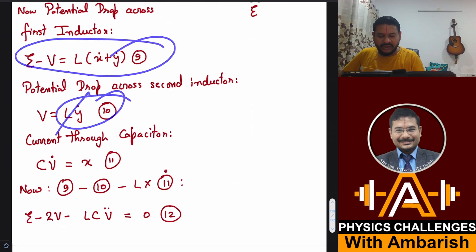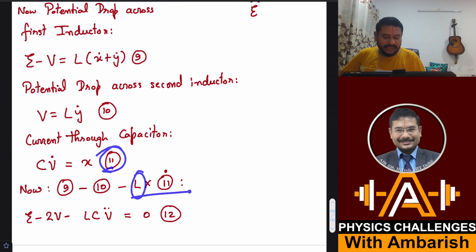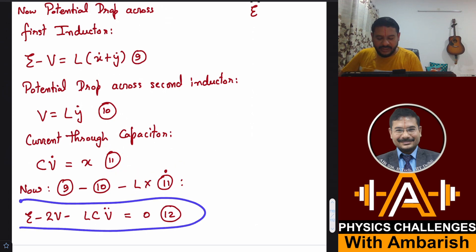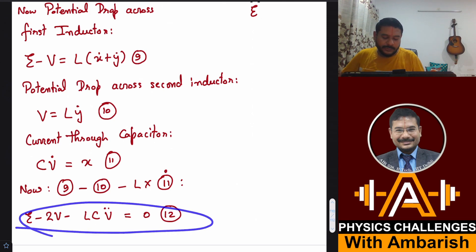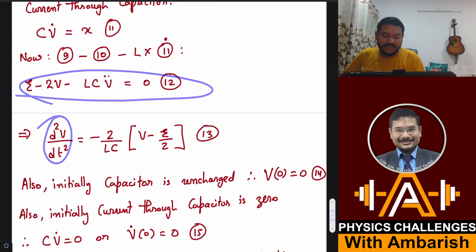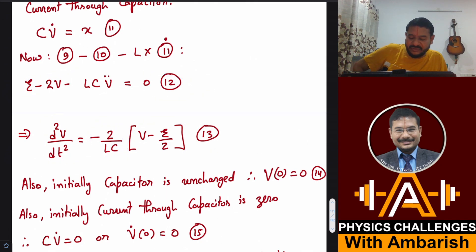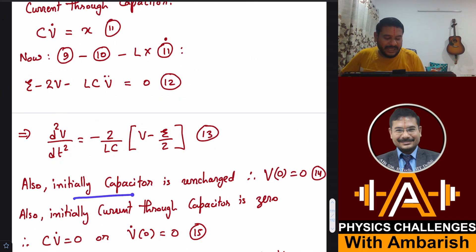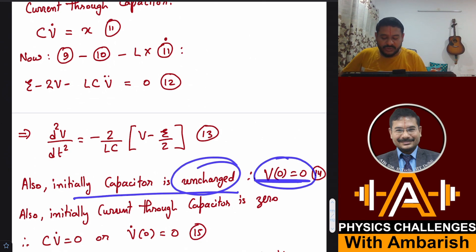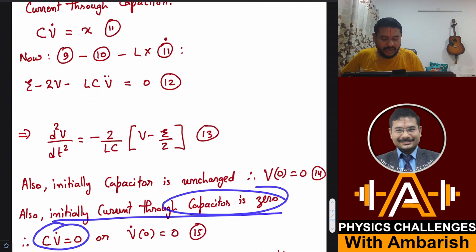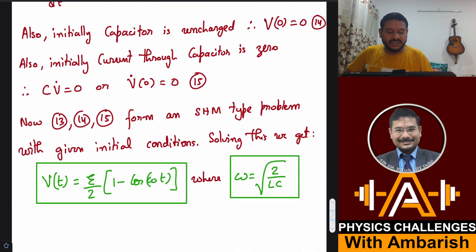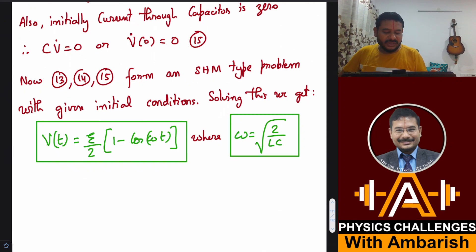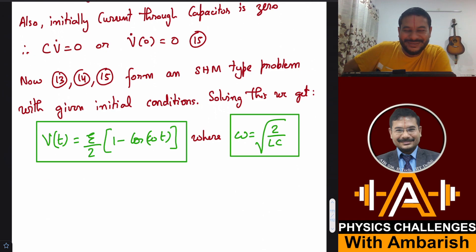Simplifying gives E − 2V − LC·V̈ = 0, which rearranges to d²V/dt² = −(2/LC)(V − E/2). With initial conditions V(0) = 0 (capacitor uncharged) and V̇(0) = 0 (initial capacitor current is zero), this is again the standard SHM equation. Solving gives the same result: V(t) = (E/2)(1 − cos ωt), where ω = √(2/LC).